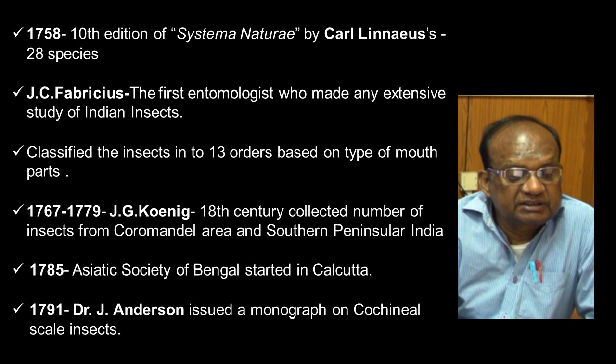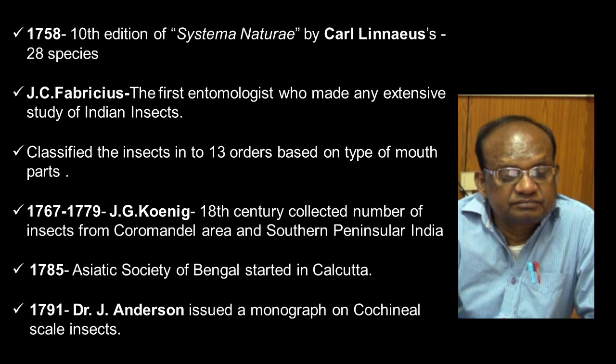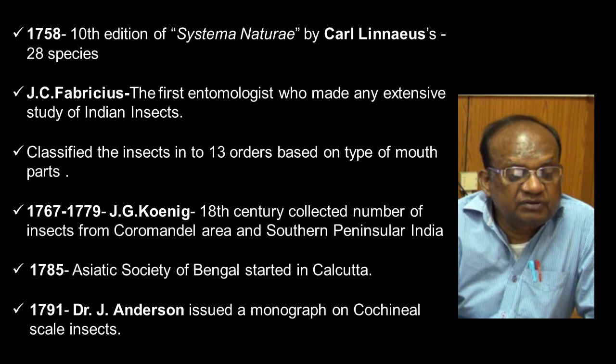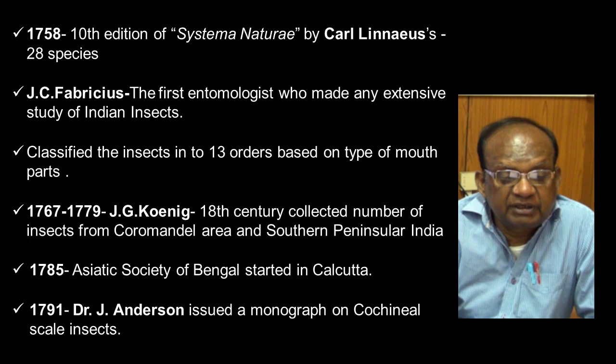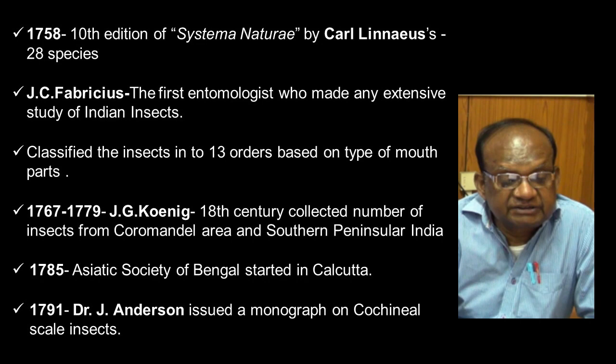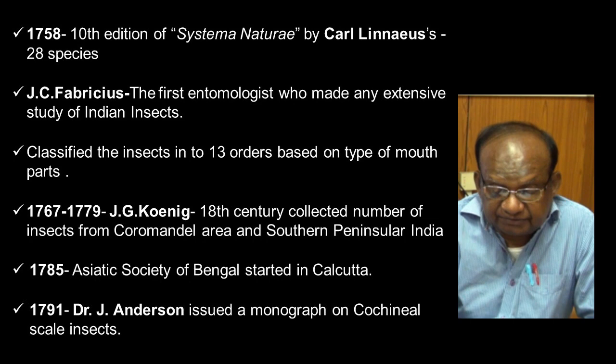During 1767 to 1779, J.G. Koenig collected a number of insects from the Coromandel area and southern peninsular region of India. Then in 1785, the Asiatic Society of Bengal started in Kolkata. Further, in 1791, Dr. J. Anderson issued a monograph on the Cochineal Scale insect — the first monograph of its kind.